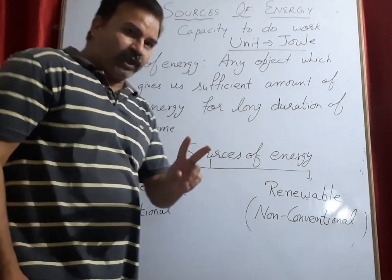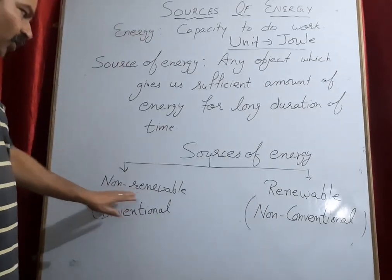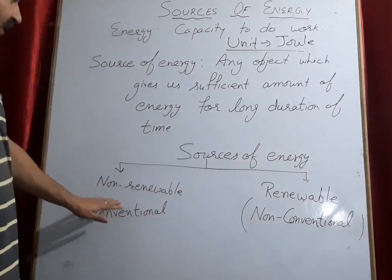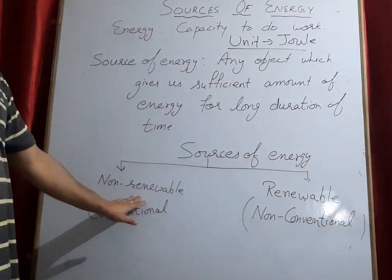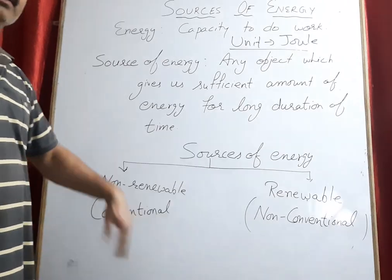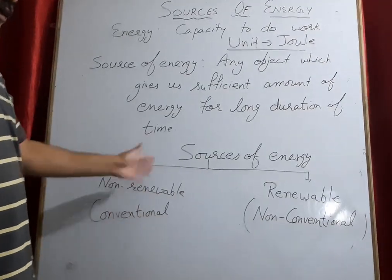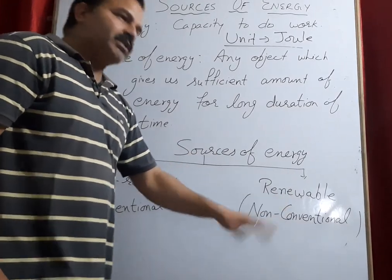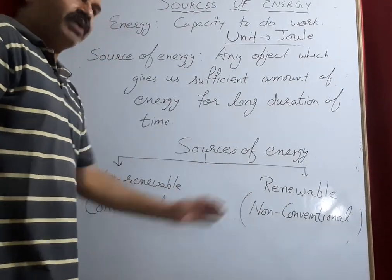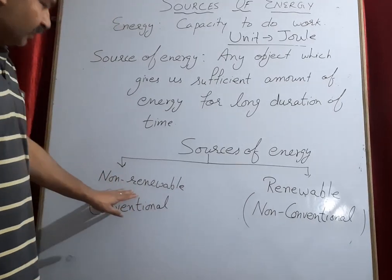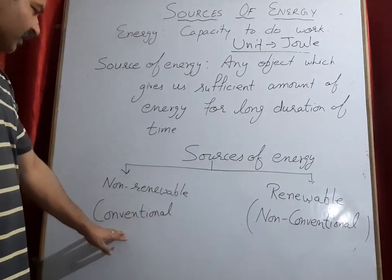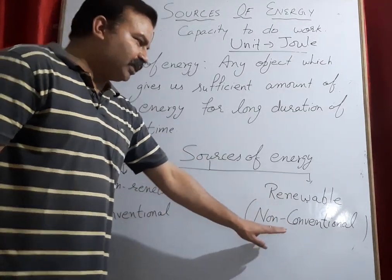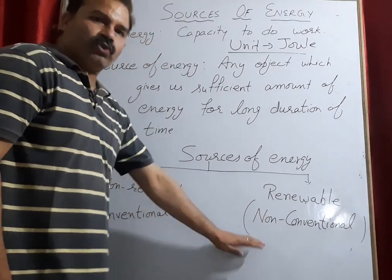Sources of energy are of two types. One is non-renewable and second is renewable. As the name suggests, non-renewable means which cannot be renewed or obtained again. Renewable means once we use it, we can use it again and get it easily. The other name for non-renewable source of energy is conventional source of energy, and the other name for renewable source of energy is non-conventional source of energy.